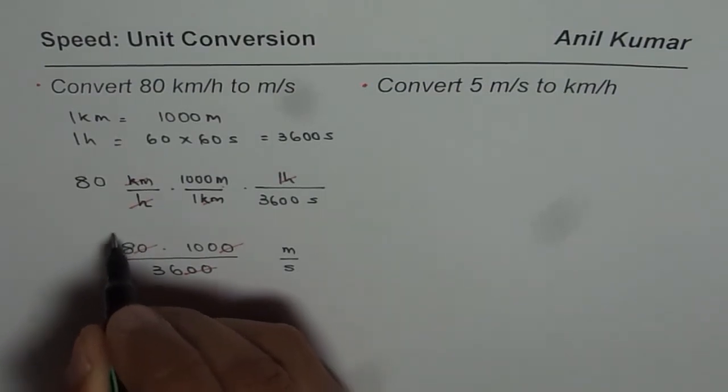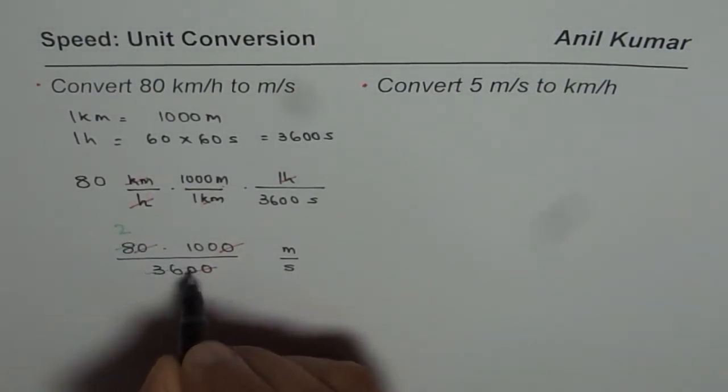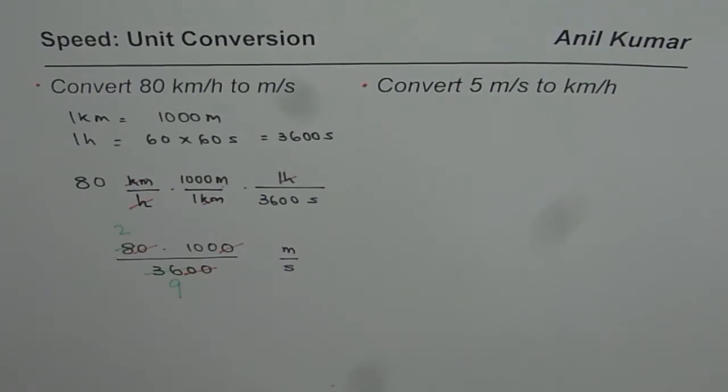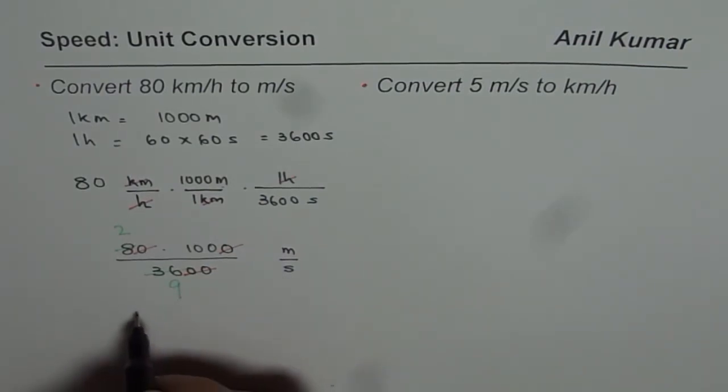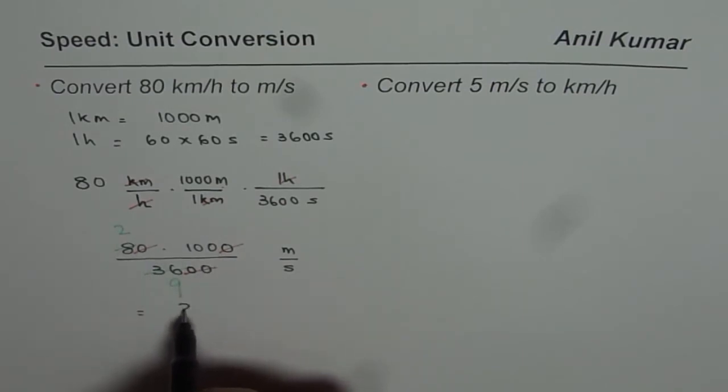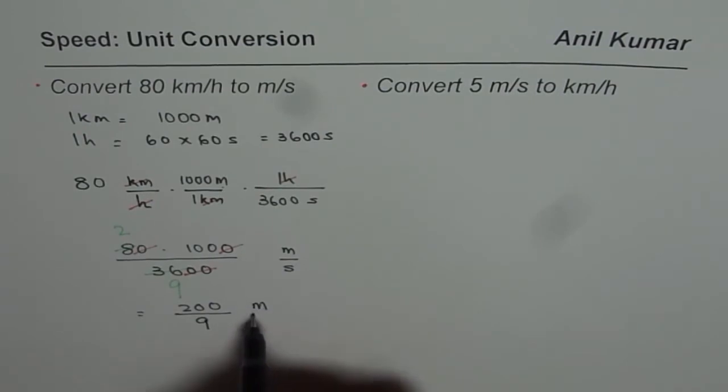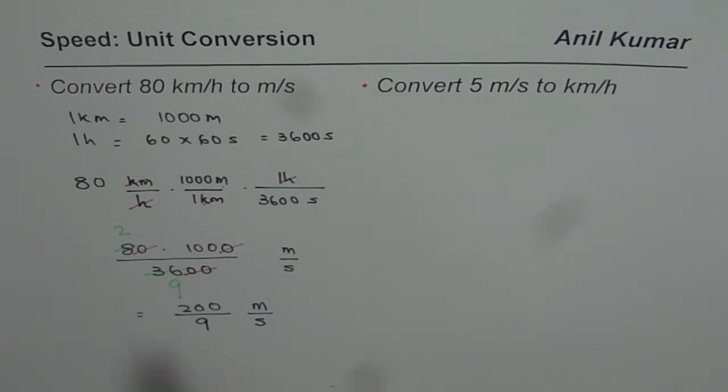So if you can divide by 4, let me write down. So 4 times 2, and if you divide by 4 times 9. So that is what you get. And this could be written as, let me write in fractions itself, which is 200 over 9 meters per second.